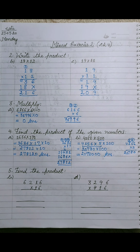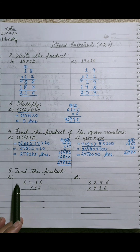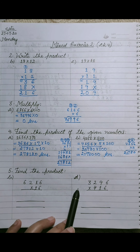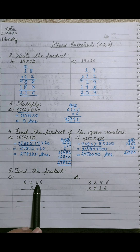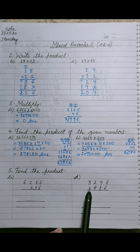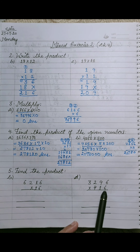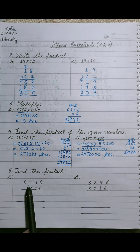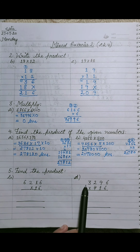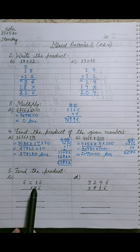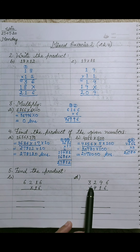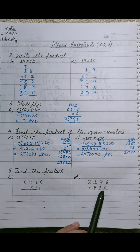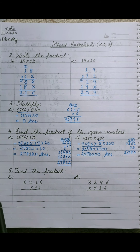Solve parts C and D of sum 4 yourself as homework. Now move to sum number 5: find the product. I am going to solve part B and part D; you will solve parts A and C as homework. Part B: 6216 multiplied by 16 — a four-digit number multiplied by a two-digit number, so we solve two steps. Part D: 3296 multiplied by 416 — a four-digit number multiplied by a three-digit number, so we solve three steps.